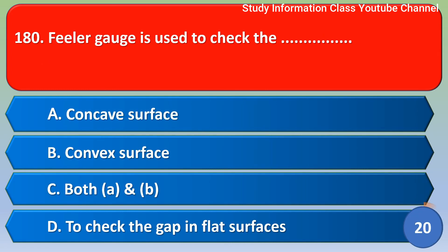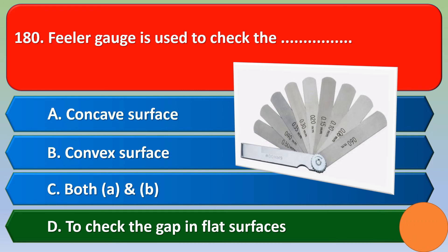Filler gauge is used to check — option A: concave surface, option B: convex surface, option C: both A and B, option D: to check the gap in flat surfaces. The correct answer is option D: to check the gap in flat surfaces.